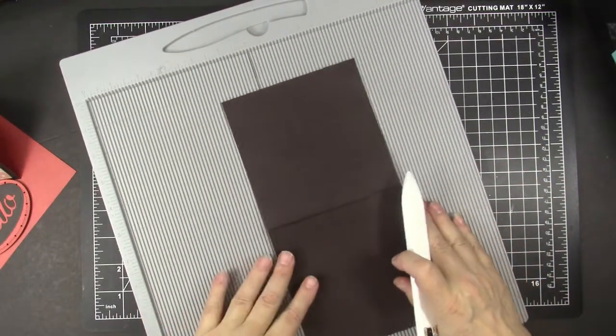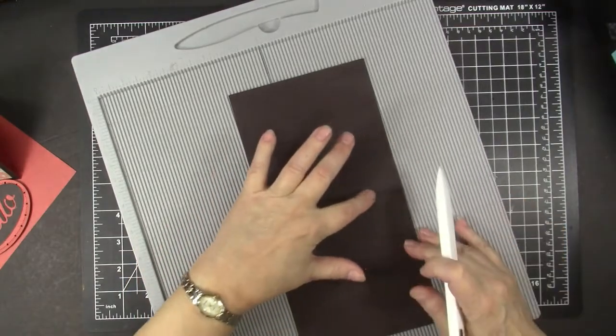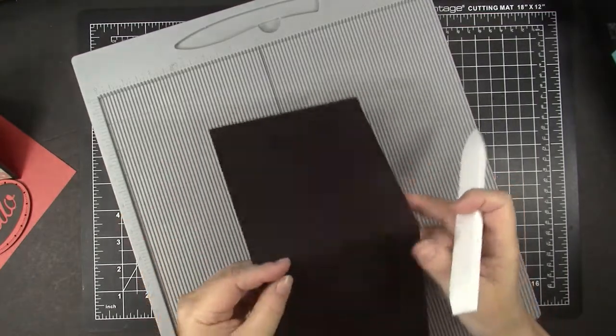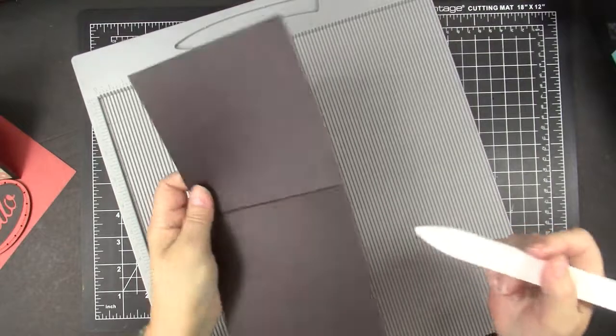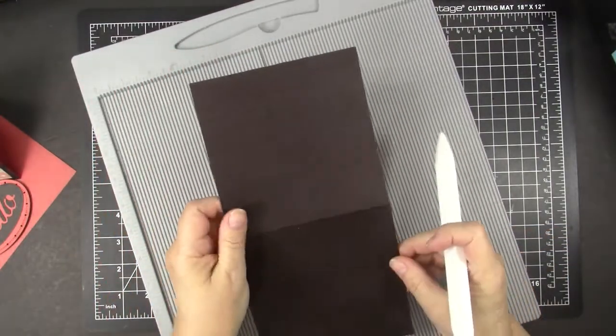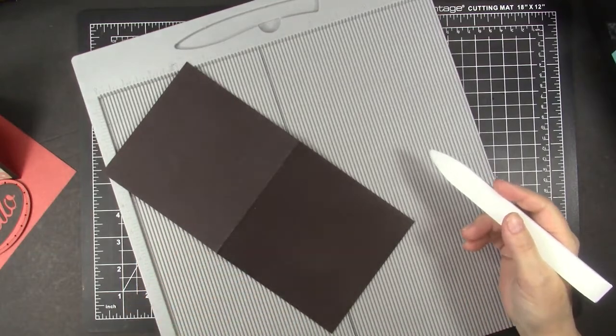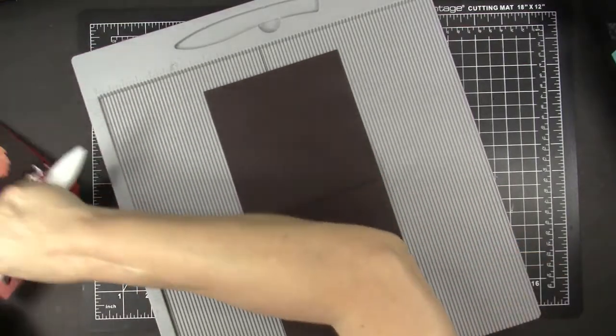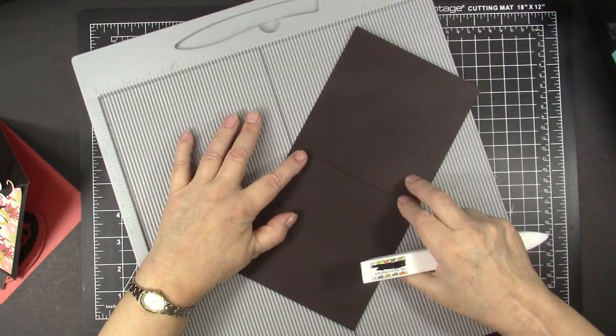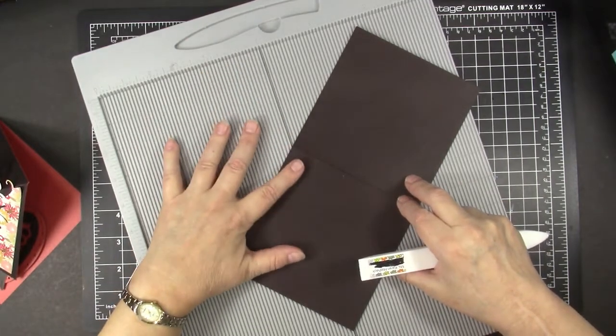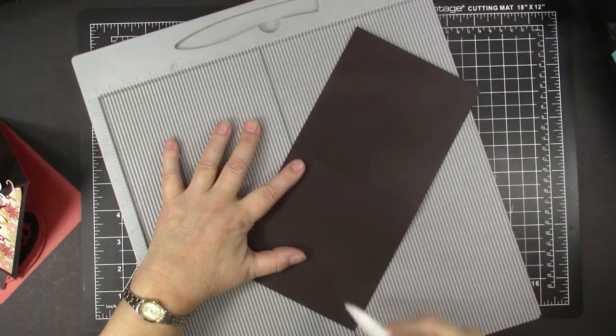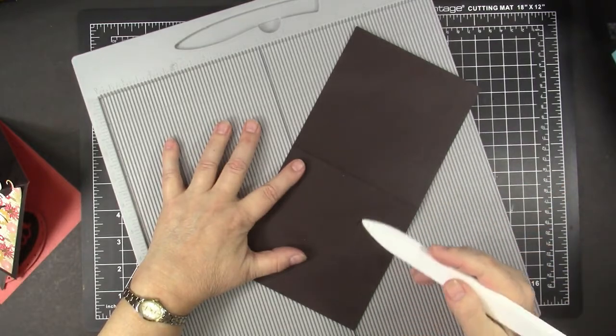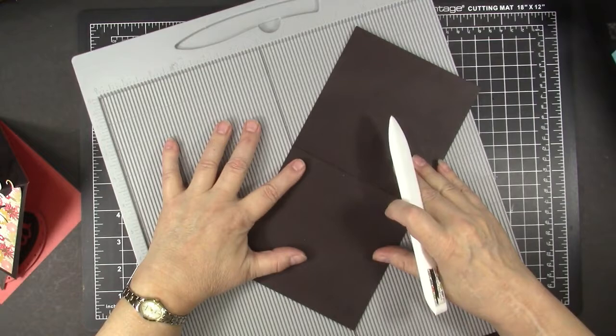We're going to start with a 5x10 card base scored at 5x5 to make a square card. Now this two-sided cardstock is from Coordination and it has dark brown on one side and this pretty bright color on the other side. We are going to score from the upper left to the bottom. And when I do this, I mark a line on my scoreboard with a permanent marker, so that I know where the top and the bottom is going to for sure line up.